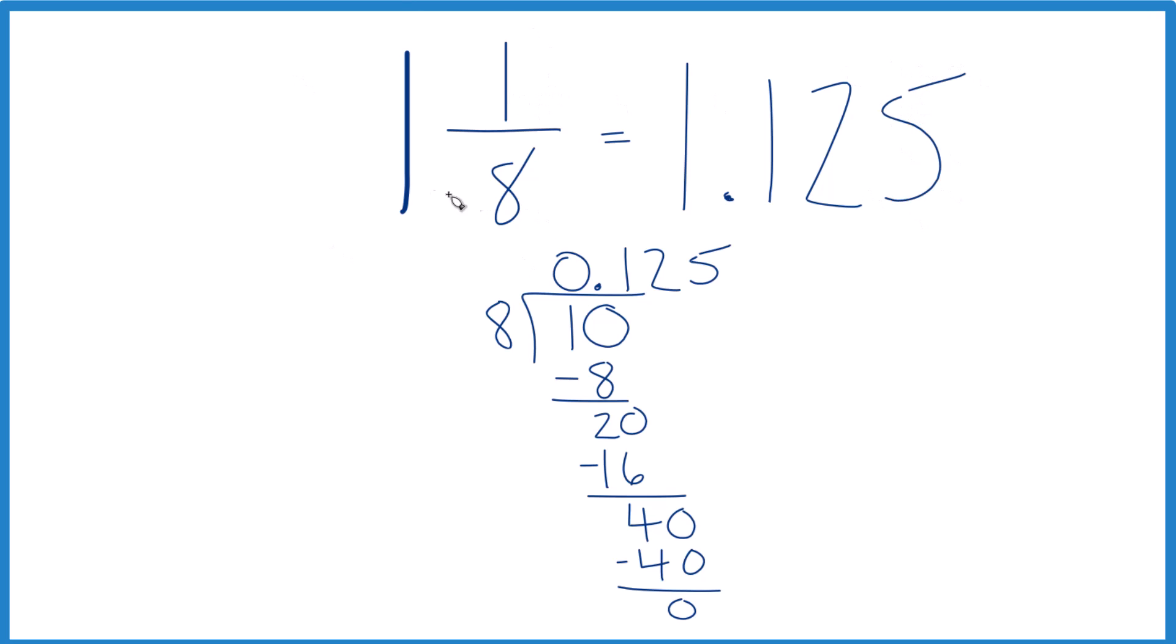So when we write the fraction 1 and 1/8 as a decimal, we end up with the decimal 1.125.